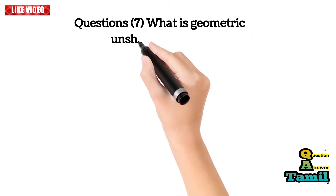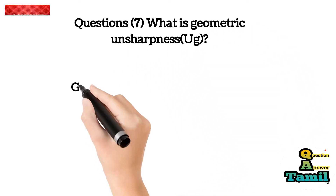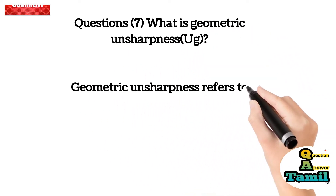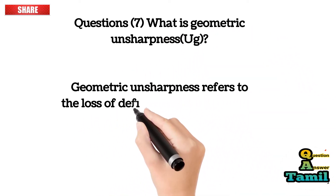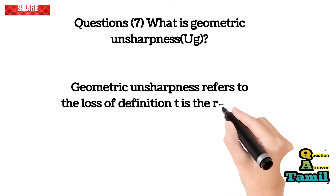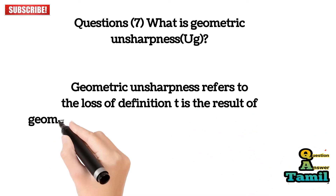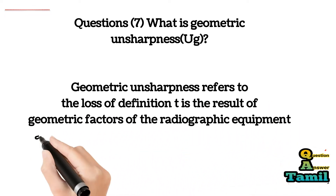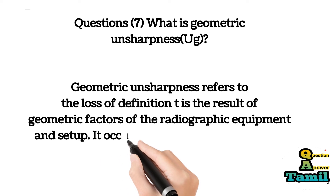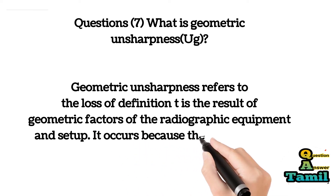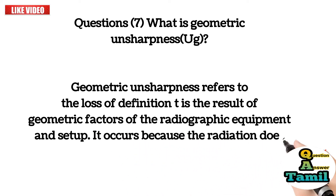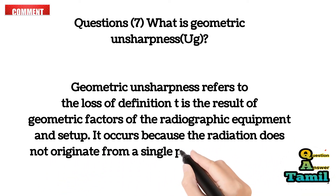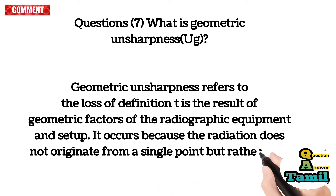Question 7: What is geometric unsharpness (UG)? Geometric unsharpness refers to the loss of definition as the result of geometric factors of the radiographic equipment and setup. It occurs because the radiation does not originate from a single point but rather over an area.